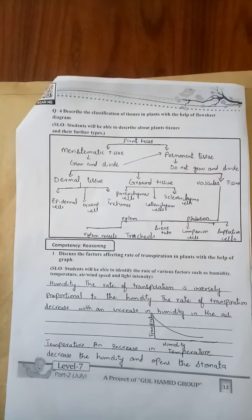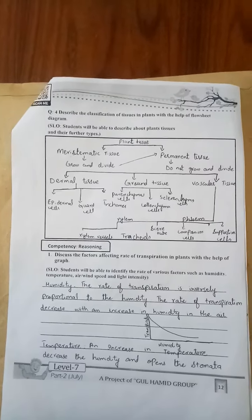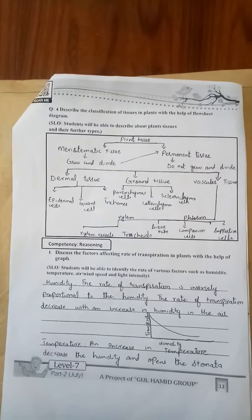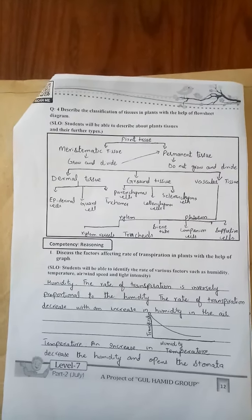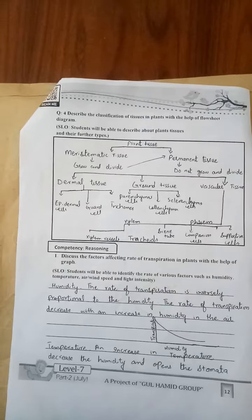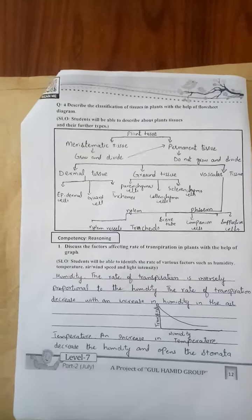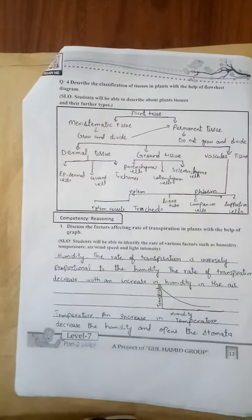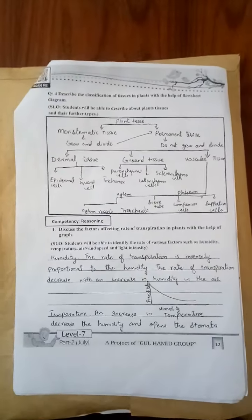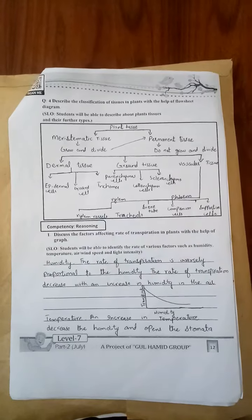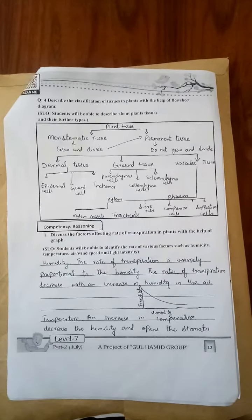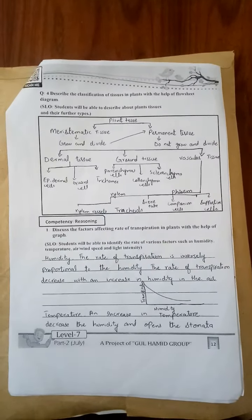Vascular tissue divides into two types: xylem and phloem. Xylem has xylem vessels and tracheids, while phloem has companion cells and supportive cells.